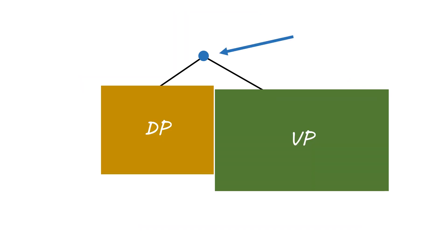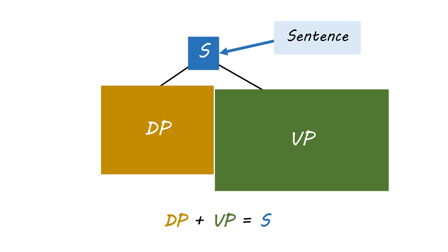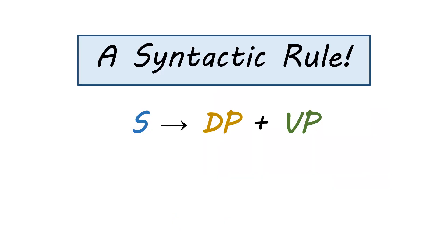A DP and a VP come together to make a new syntactic category which we call a sentence. We can write this as an equation: a DP plus a VP creates an S, creates a sentence. They're like variables in algebra - anything that fits the description of DP or VP lets us create a sentence. This is called a syntactic rule, and when we write syntactic rules we write it as: S arrow DP plus VP.